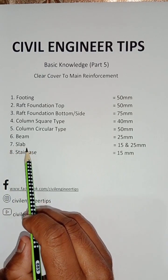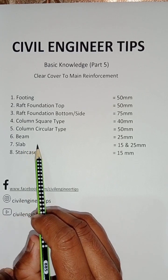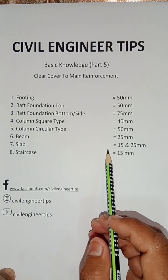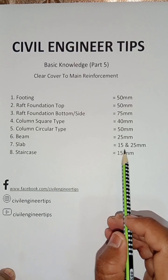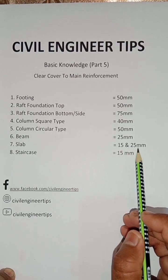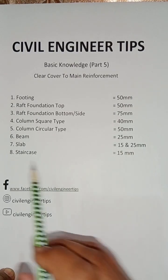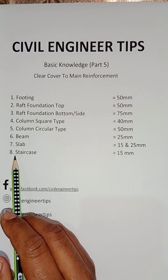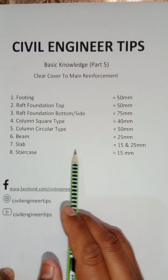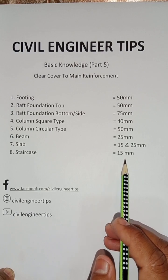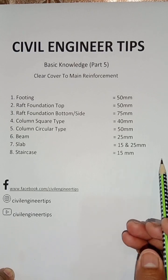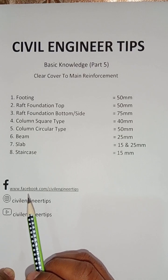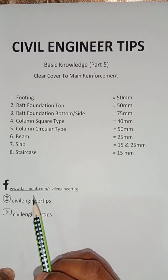Number seven is slab — the slab clear cover is 15 mm to 25 mm. Number eight is staircase — the staircase clear cover is 15 mm. If you like my video, please share it and subscribe to my channel.